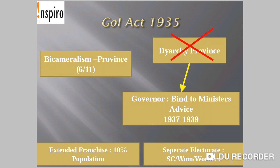The Diarchy of the provinces was abolished, meaning the Governor became more accountable and bound by the ministers' advice. However, that accountability — where the Governor had to function as per the ministers' decisions — continued only from 1937 to 1939, after which it was abolished and the Governor got more freedom. Franchise was extended from the limited franchise of 1919 to around 10% of the population coming under voting power. Separate electorate, introduced for Muslims in 1909 and extended to other communities in 1919, was now further extended under the Government of India Act 1935 to scheduled caste people, women, and laborers or workers.